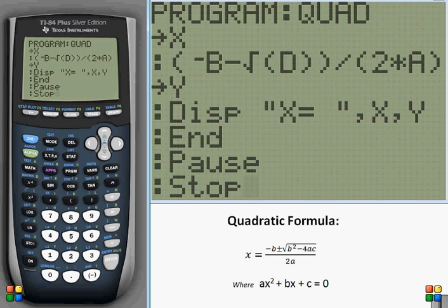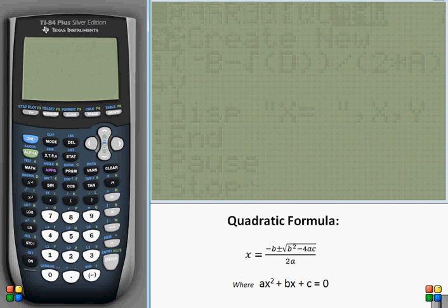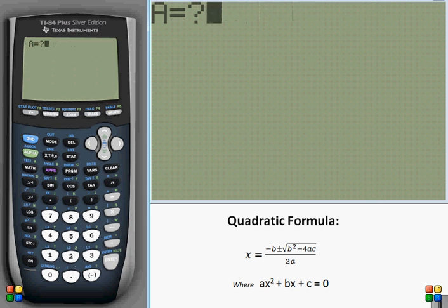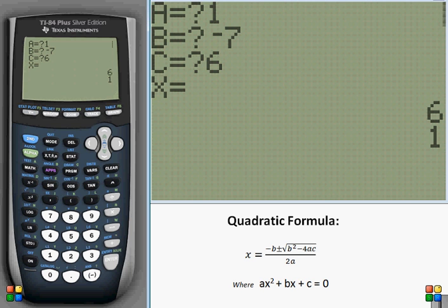So let's go ahead and test her out. Go ahead and run the program. And let's put in some values here. One, negative seven, and six. Should we get one and six? There we are. See? Look at that. It works. Alright.